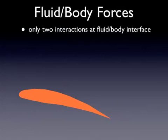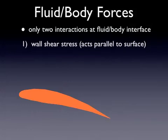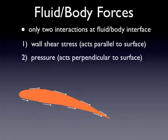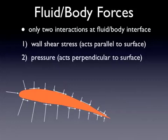Drag and lift result from the interaction of fluids and the surface of objects. It's the result of two different forces that act at that interface. The first is shear stress, and this always acts parallel to the surface — basically the fluid rubbing against the object. The second force is pressure force, and this always acts perpendicular to the surface of the object, due to different pressure distributions that develop as the flow travels around the object.